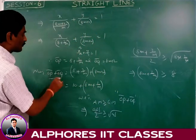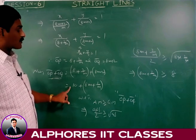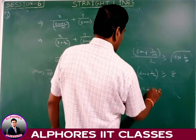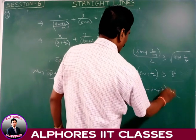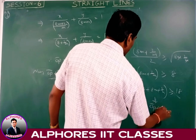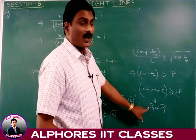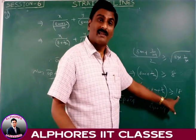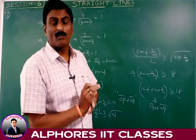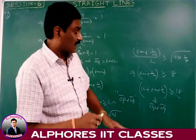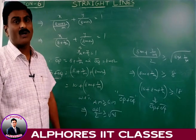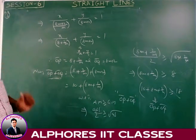Since OP plus OQ equals 10 plus 8M plus 2/M and 8M plus 2/M ≥ 8, we get OP plus OQ ≥ 18. Therefore the minimum value of OP plus OQ is equal to 18. This is a very very important result.